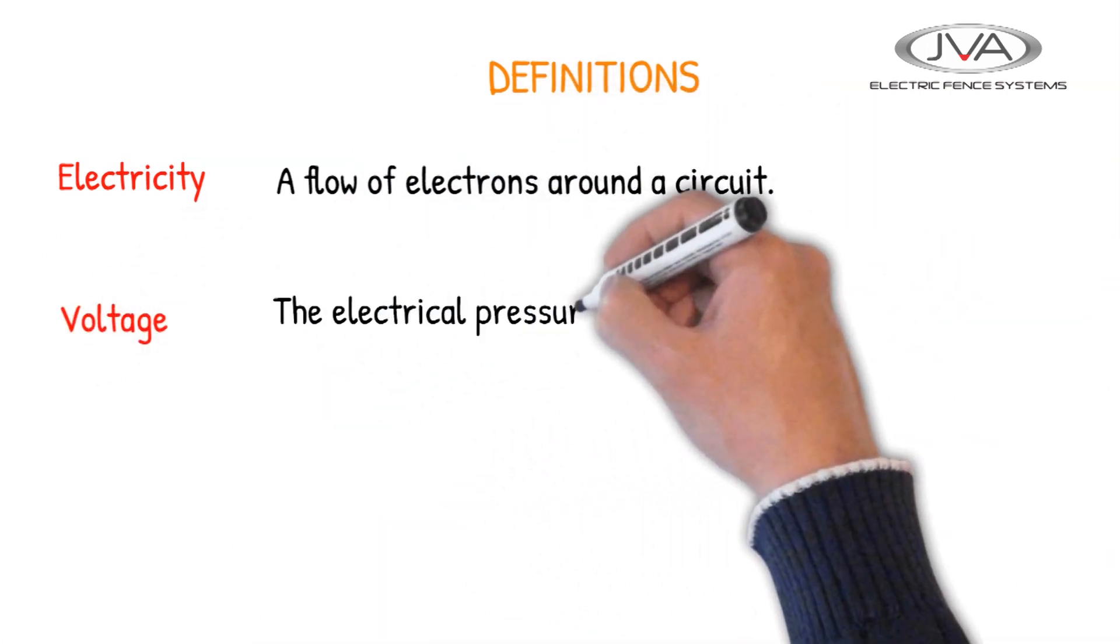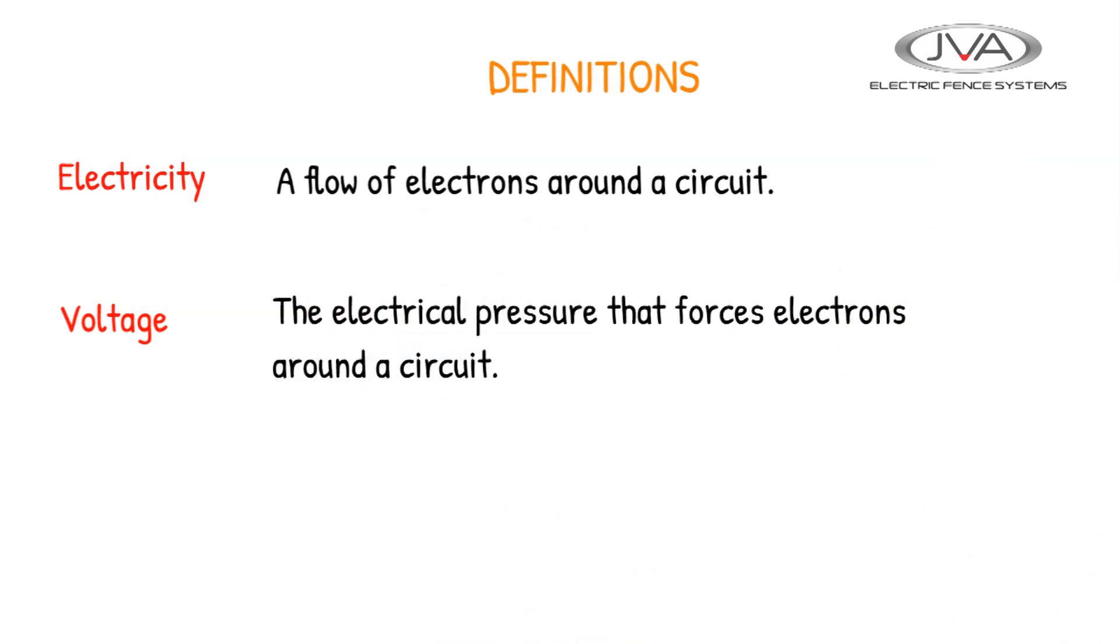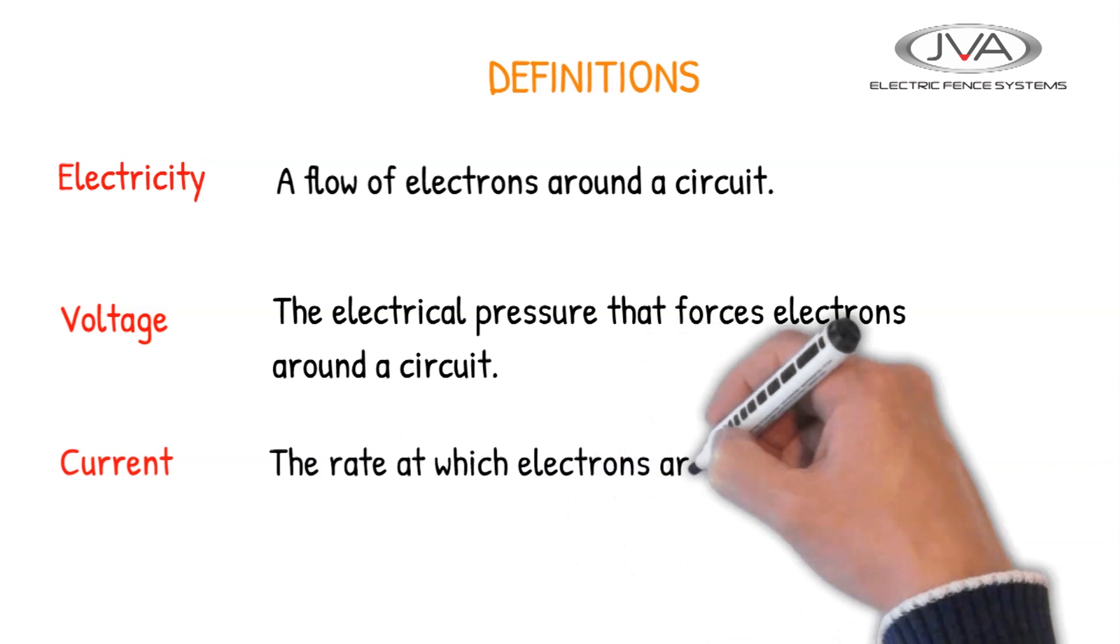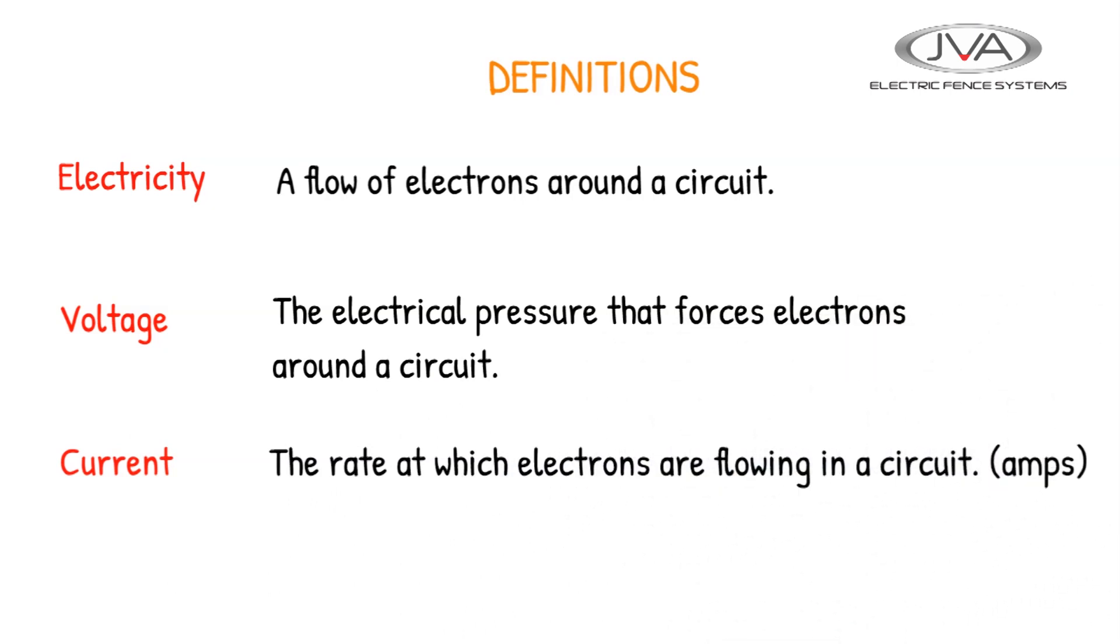Voltage is the electrical pressure that forces electrons around a circuit. A voltage is necessary before any current can flow. So current is the rate at which electrons are flowing in a circuit.